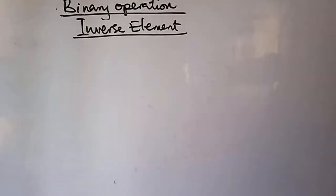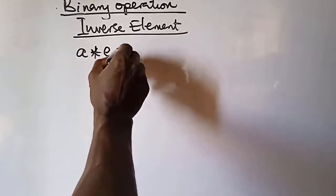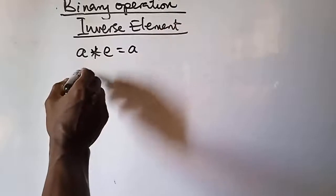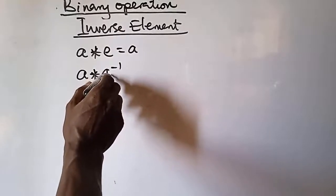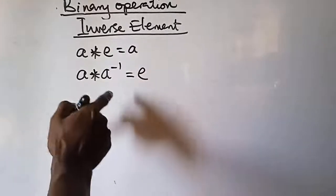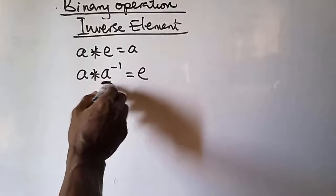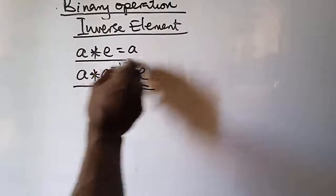Today we're talking about the inverse element. Previously with the identity element, when an element is operated with an identity element it gives you the same element. But in the case of inverse, if a is operated on the inverse of a — that is the symbol for inverse element — this will give you the identity element. So for you to find the inverse, you must first find the identity element. That is the rule.